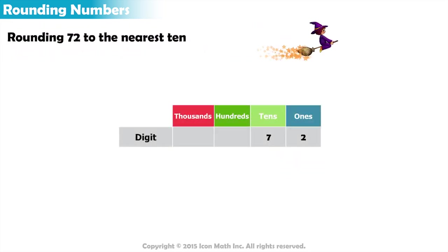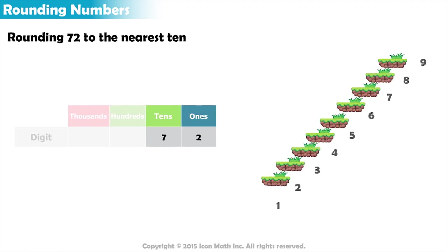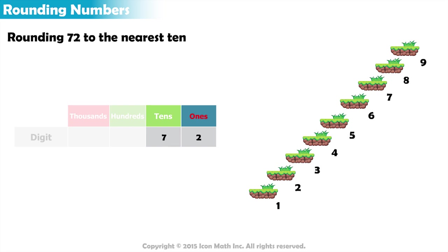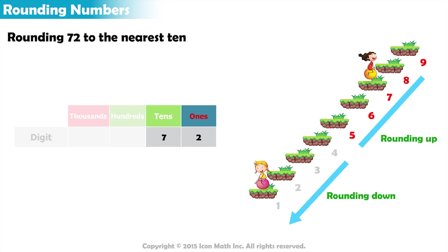Suppose we want to round 72 to the nearest 10. All we have to do is look at the digit in the tens place and the digit in the place to its right, which will be in the ones place. If this digit is less than 5, we round down. If it is equal to or greater than 5, we round it up.